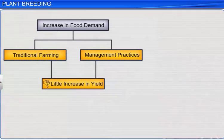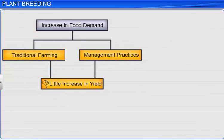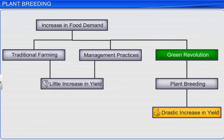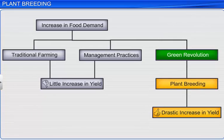It was only during the 1960s that the Green Revolution brought about a drastic increase in the production of high-yielding, disease-resistant crops, like wheat and rice, by employing plant breeding techniques.